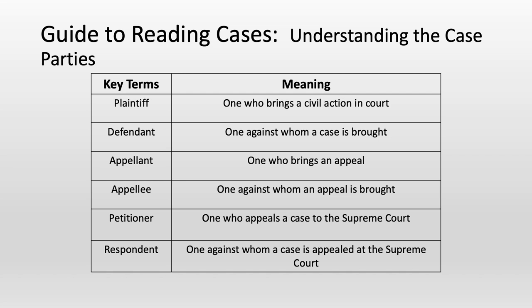Let's go through the names of the individuals who may be involved in cases. Number one, the plaintiff is the person who brings the civil action in court. They're the ones that say they believe that the law was broken and they're here to complain about it. The defendant is the person against whom a case is brought. Typically, the plaintiff is complaining about something that the defendant did, and they're charging them with a civil violation.